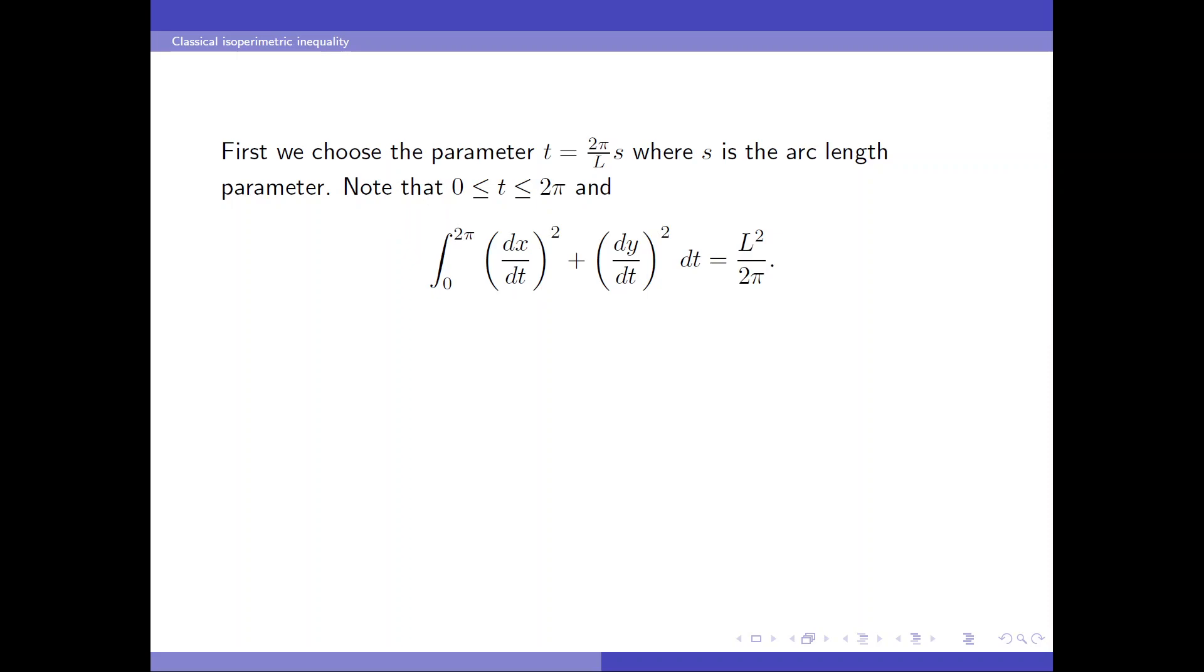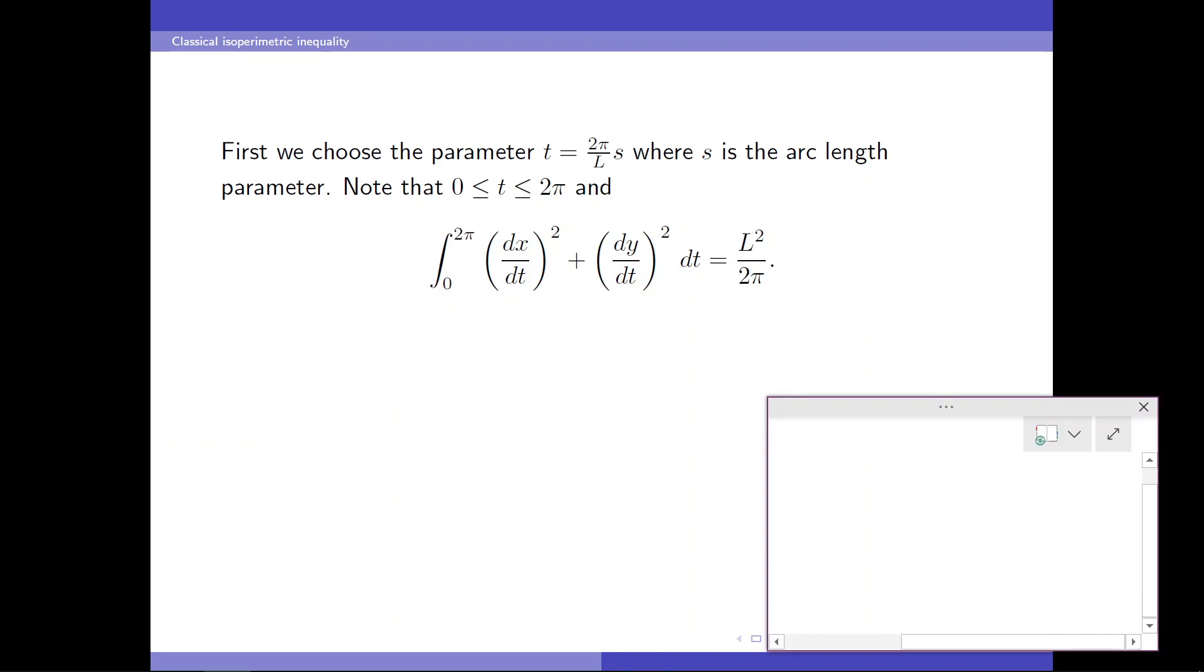We choose the parameter t equals 2 pi over L times s, where s is the arc length parameter. We know that this normalizes the interval of integration as 0, 2 pi. And we have the following relation. To see this, let's compute. We have dx/dt equals dx/ds times ds over dt. And we get L over 2 pi. And taking the square root of it, using the fact that s is the arc length parameter, we get the identity.